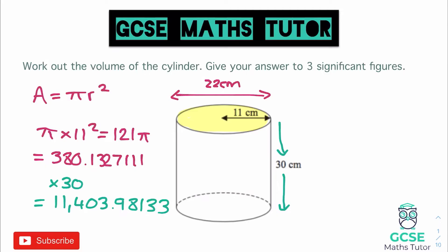So there is our volume — obviously that's going to be in centimetres cubed, so we won't forget that when we write our final answer. We need to round this to three significant figures as asked. Going from the first whole number, three along gives us 114, and since we've chopped after the four, which is in the hundreds position, we're rounding to the nearest hundred. So our final answer is 11,400 centimetres cubed.